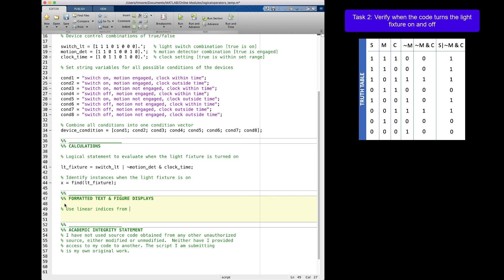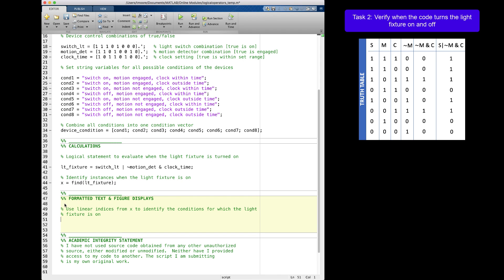To finish up this problem, I will display when the light is on in words. I begin by creating a new variable, fixture underscore on, in the formatted text section of the template. Then use linear indexing to output just the strings that go with the conditions when the light fixture is turned on. Again, let's run the code.